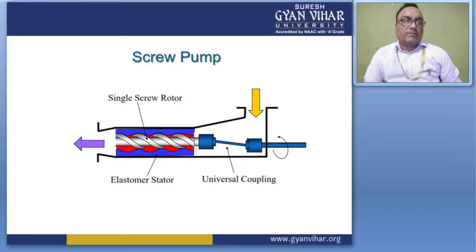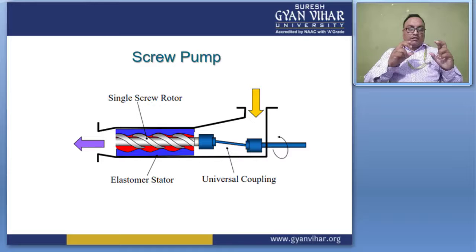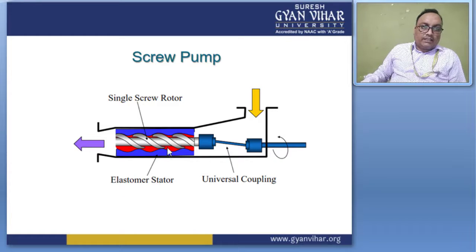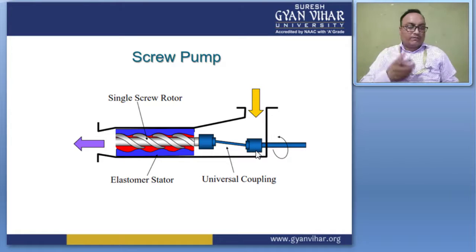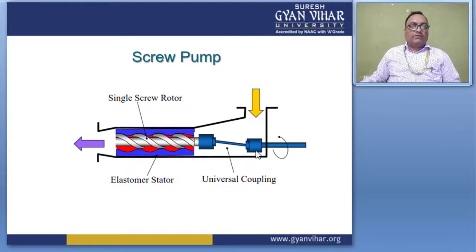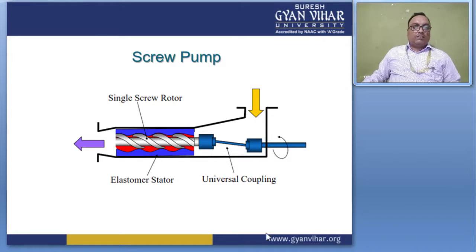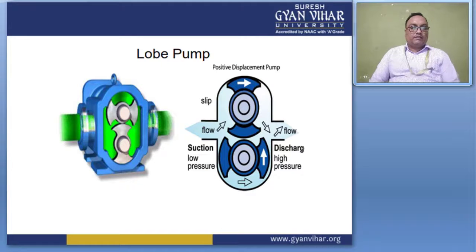The screw pump has a single screw rotor that drives the pump. The fluid enters at the inlet, is pressurized by the rotating screw, and exits at the outlet. The pump has an elastomer stator and a universal coupling to drive it. This is a type of rotary positive displacement pump.